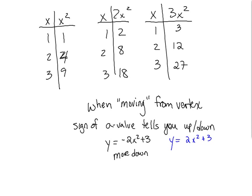Now, when we're moving, we're talking about moving from the vertex. The first number in the x column is going to, we're going to move 1 to the right and 1 to the left, 2 to the right, 2 to the left, 3 to the right, 3 to the left. Now, the second number, either in the x squared column or the 2x squared column or the 3x squared column, that's going to tell us to move up or down. And it's going to depend on the sign of the a value.